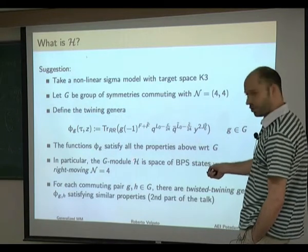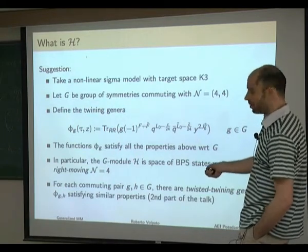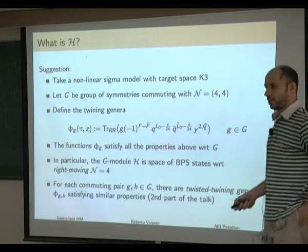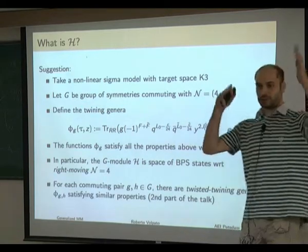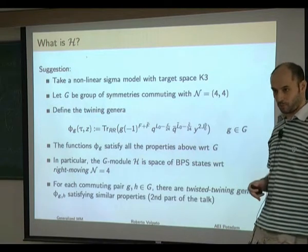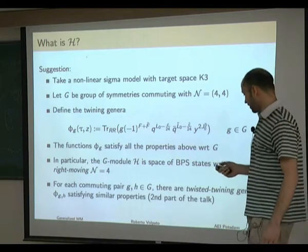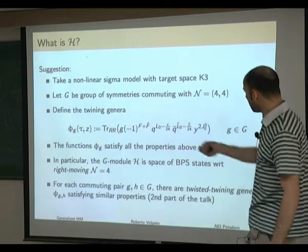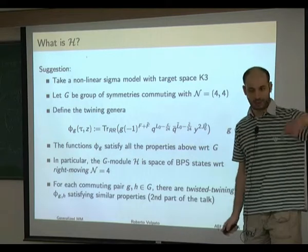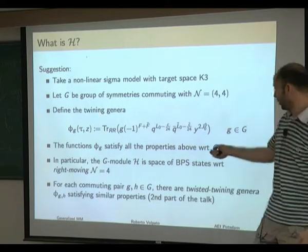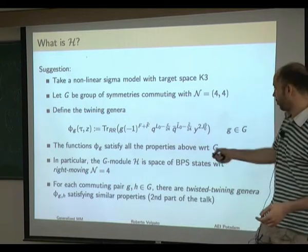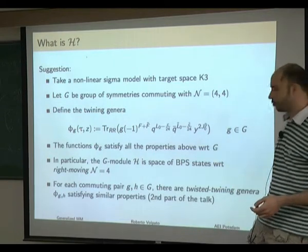In particular, this G-module H turns out to be the space of BPS states with respect to the right-moving N=4 superconformal algebra. The modularity properties of this twining genus follow from interpreting it as a path integral on a torus with modular parameter tau.